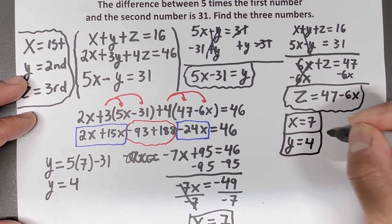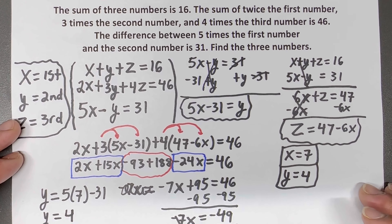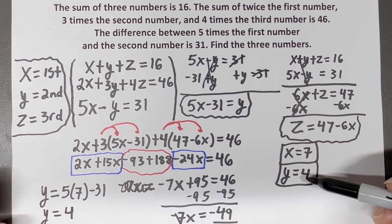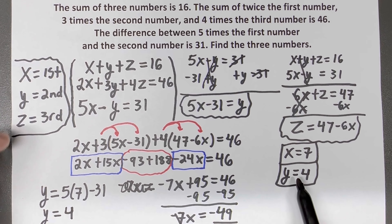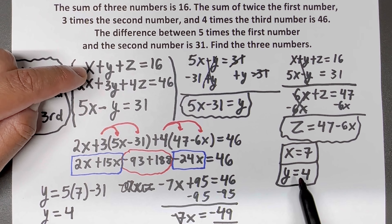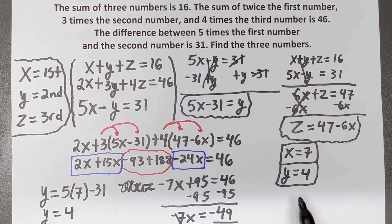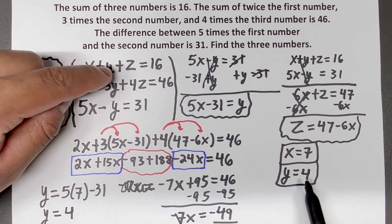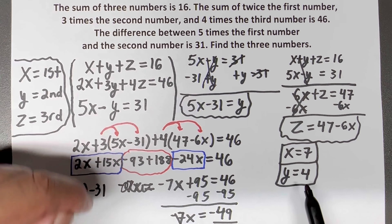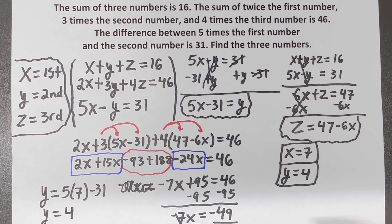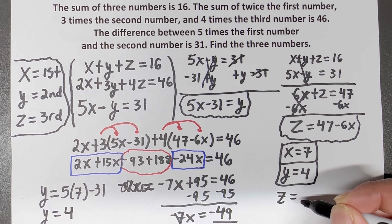Now I have x and y, so let's use the top equation to find z. x is 7, y is 4, so 7 plus 4 plus z equals 16. Since 7 plus 4 is 11, I need a 5 to make 16. So z equals 5.